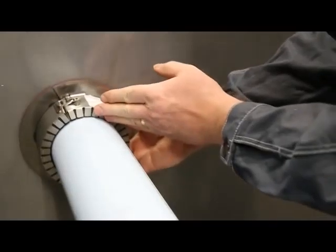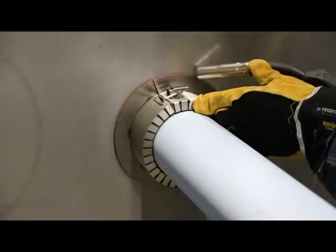Place the fire penetration seal onto the structure and tack weld the flange to the structure.